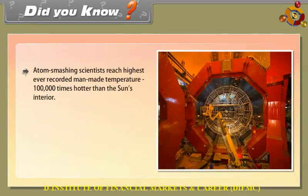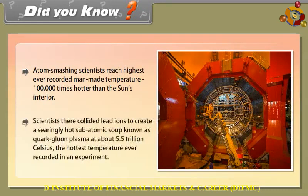Did you know? Atom-smashing scientists reached the highest ever recorded man-made temperature — one lakh times hotter than the sun's interior. Scientists collided lead ions to create a searingly hot subatomic soup known as quark-gluon plasma at about 5.5 trillion degrees Celsius — the hottest temperature ever recorded in an experiment.